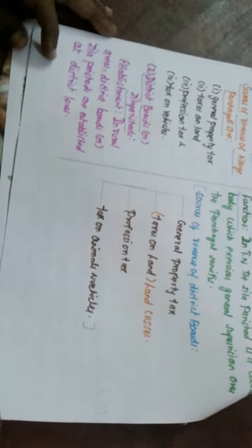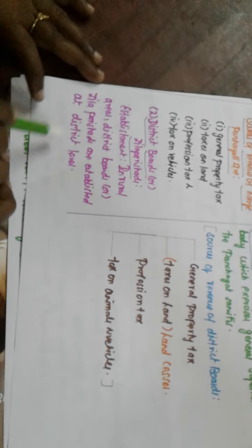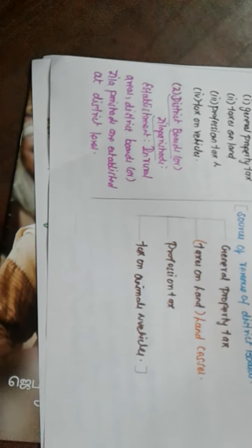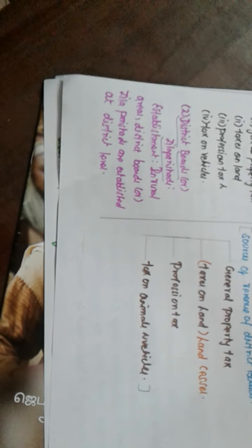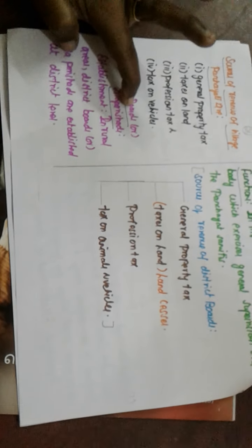Next, district boards or jila parishads. These are established at the district level in rural areas. A district includes a certain number of villages — for example, 16 or 20 villages accumulated together. In Tamil Nadu, the jila parishad is the main important coordinating body, which exercises general supervision over all panchayat centers in rural areas. It inspects all those rural areas under its jurisdiction.